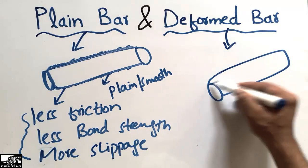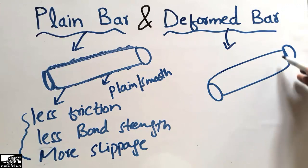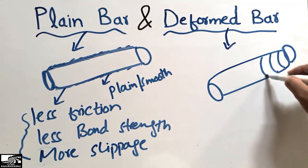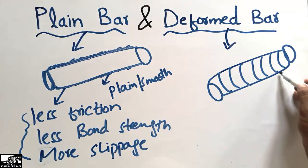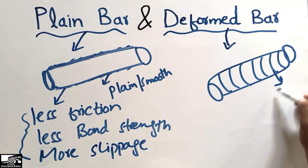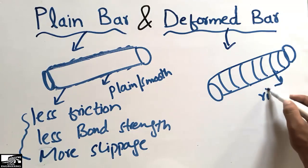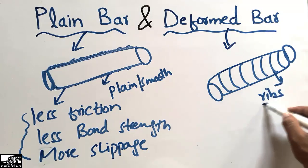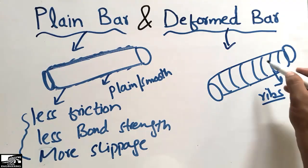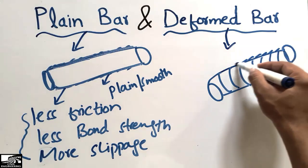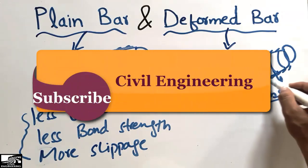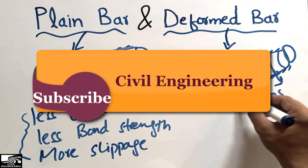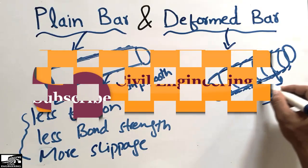In the case of deformed bars, the deformed bars have ribs throughout the length of the steel bars. These ribs make the surfaces of the steel bar rougher and provide more friction with the concrete.